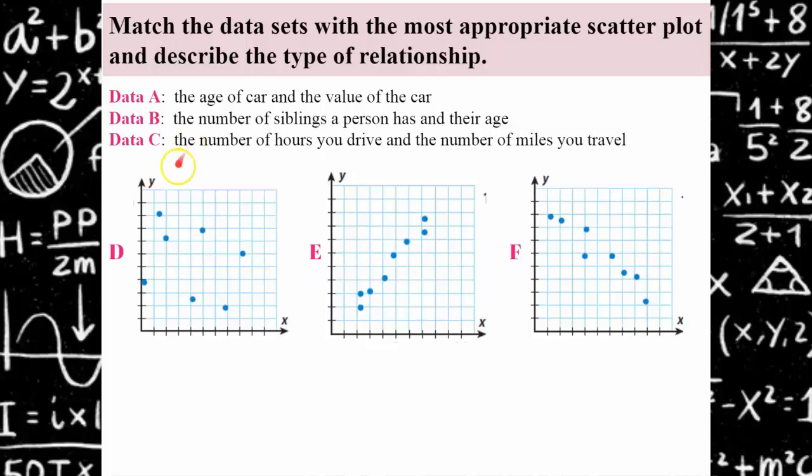Welcome back. So first let's look at graph D. That would model the data from B, the number of siblings a person has and their age. There's absolutely no correlation between the number of sisters and brothers that you have and your age.